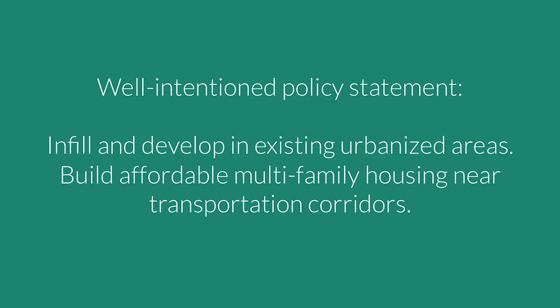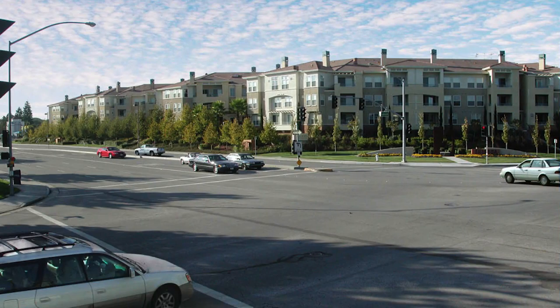As a reminder, this is from a comprehensive plan policy goal. And in fact, the previous image was computer generated. This is the real photograph of that place. And if you remember the statement, this is also affordable multifamily housing along a transportation corridor. But it's probably not exactly what this community had in mind — and in fact, this is what their development regulations delivered.